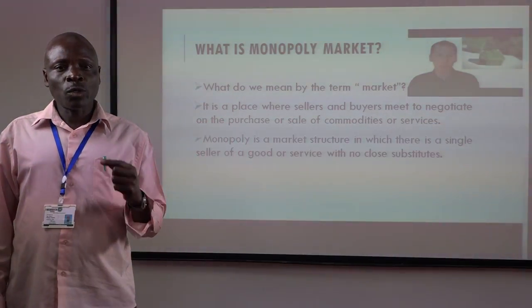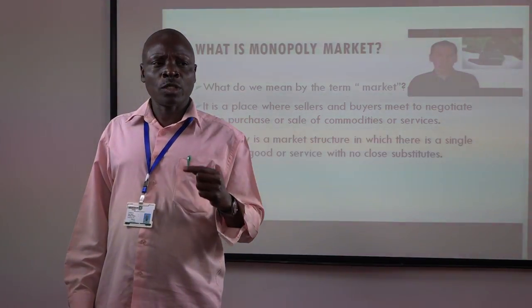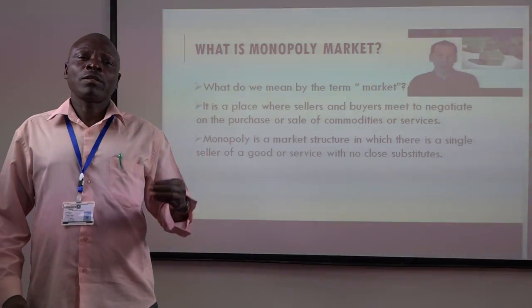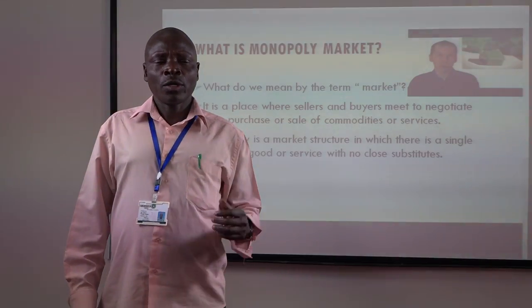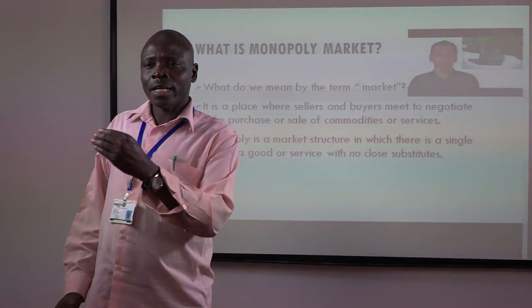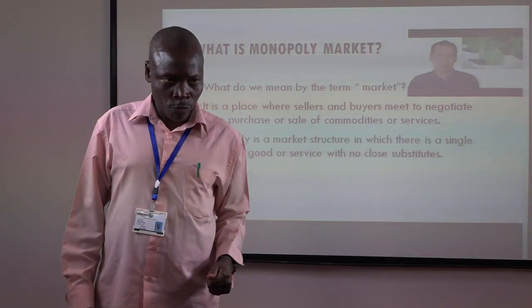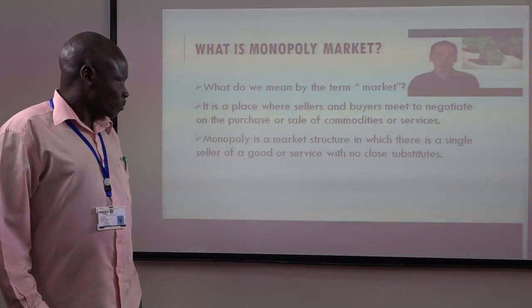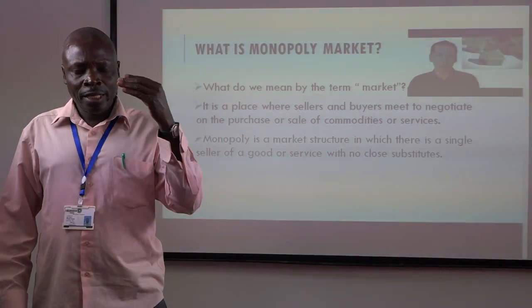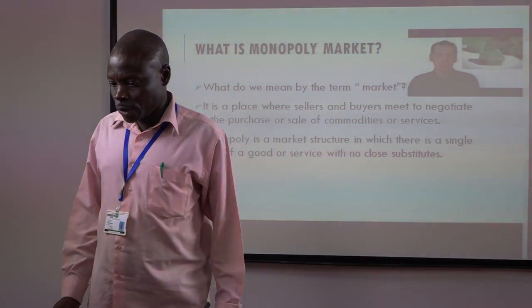In this case, the commodity that this seller sells should have no close substitutes. Substitute goods are those goods which serve the same purpose. For example, goods like coffee and tea — when there is no coffee, you can do very well with tea. So monopoly market is where the seller sells goods which have no close substitutes.